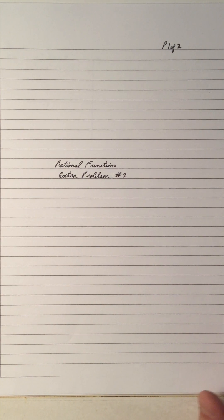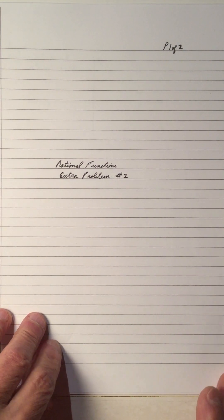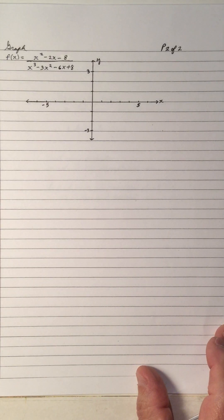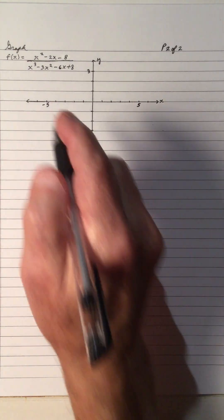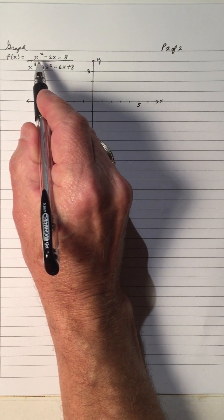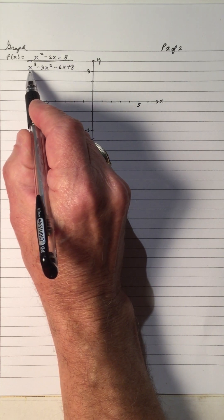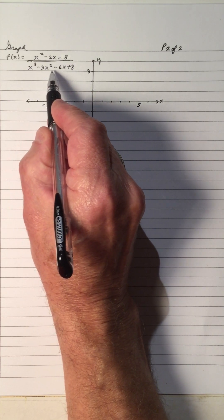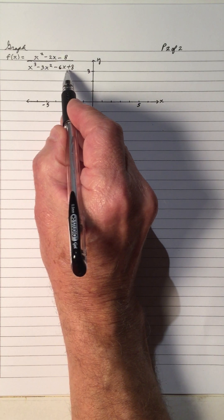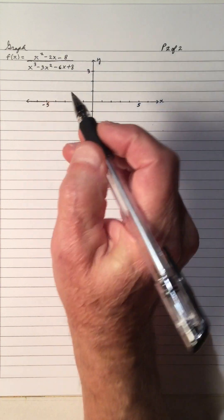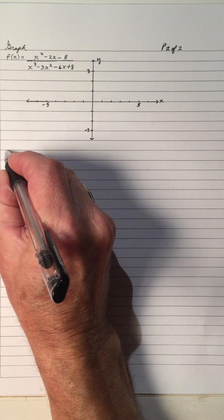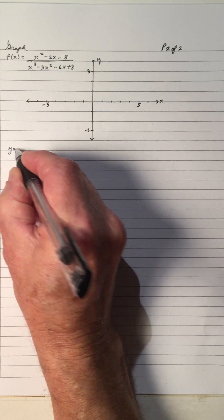Hi, and welcome to my video on rational functions, extra problem number 2. I've made up another problem, very similar to the one we just had, but yet a little bit different. Graph f of x equals x squared minus 2x minus 8, divided by x cubed minus 3x squared minus 6x plus 8. And let's write the equation as y equals.